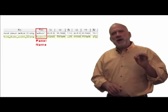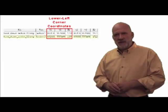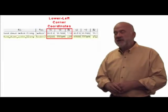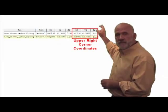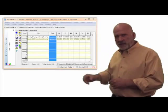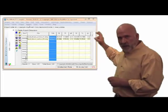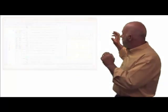Next, we create a RockWorks datasheet that lists the image names and their associated corner point coordinates. Finally, we select the vertical images to 3D panels program from the RockWorks imagery menu, and voila!